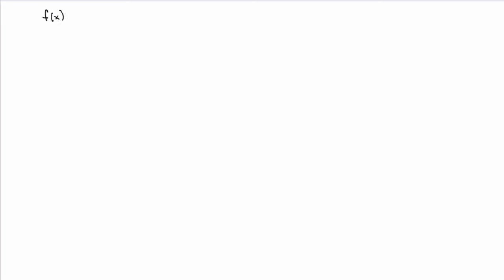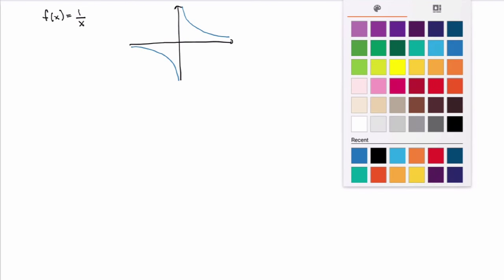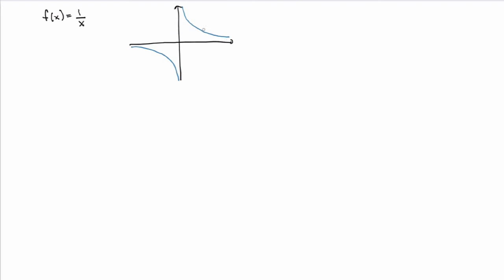Consider the function 1 over x. What does the graph of this function look like? On the positive side you'll get one branch, and on the negative side you'll get another branch. Just looking at the graph, we see that if x becomes very large, the function goes towards 0, while if x becomes very large but negative, it also goes towards 0. So the limit as x goes to infinity of 1 over x equals 0, and similarly the limit as x goes to minus infinity of 1 over x is also 0. That makes sense: if x becomes very large, 1 over x becomes extremely small, so it goes towards 0.